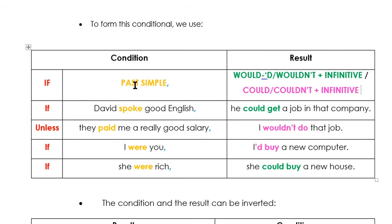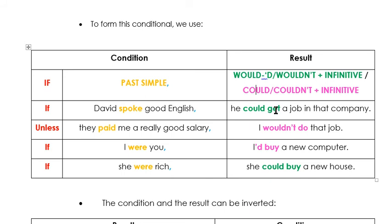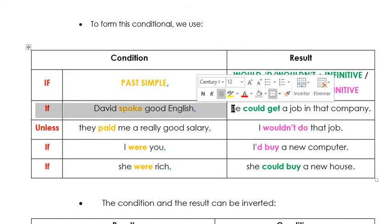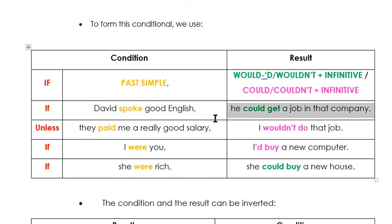For example: if David spoke good English, he could get a job in that company. 'He spoke' would be the past simple in the if clause; in the result clause we have 'could get' — the modal verb 'could' and the infinitive verb 'get'. Here we have the imaginary situation and here we have its consequence. If David spoke good English — si David hablara inglés de forma correcta — sería nuestra situación imaginaria. He could get a job in that company — podría trabajar en esa compañía — sería la consecuencia.